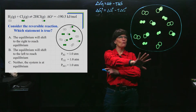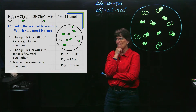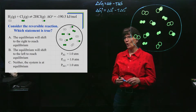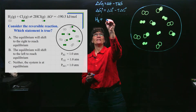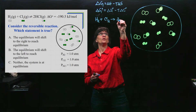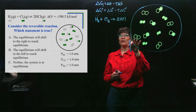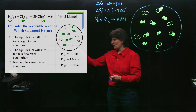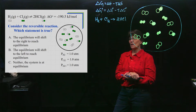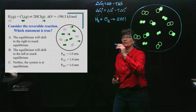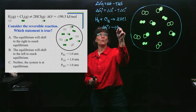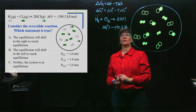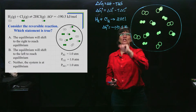Now let's examine this reaction. I've got it drawn here so I can manipulate it. Our system is at equilibrium with everything at one atmosphere. The reaction is H₂ (gas) plus Cl₂ (gas) going to 2HCl (gas). Everything at the beginning is at one atmosphere. The standard delta G value is negative 190.5. What that tells me is that if this reaction started with all reactants and products at one atmosphere, the value of delta G would be negative 190.5.